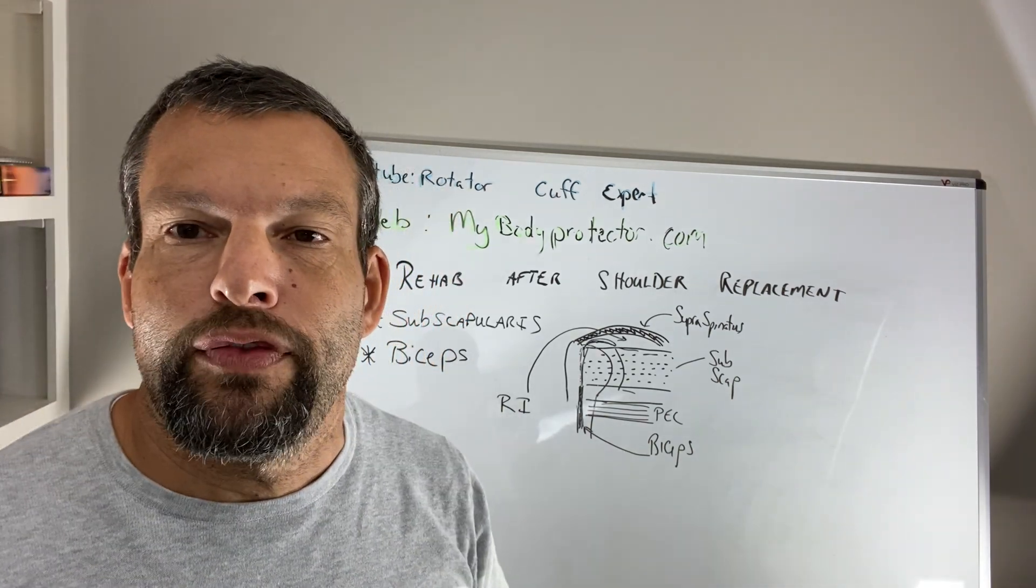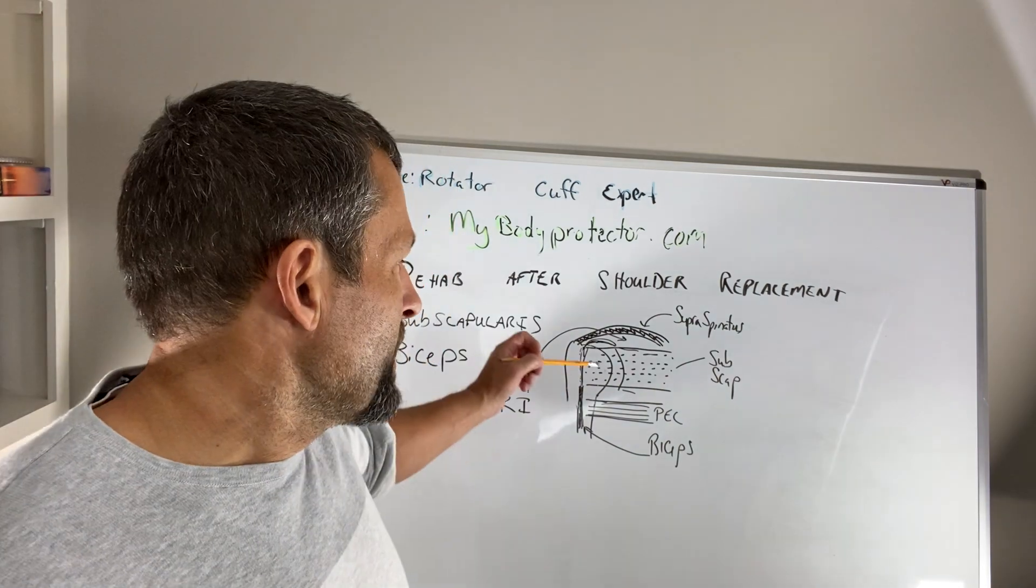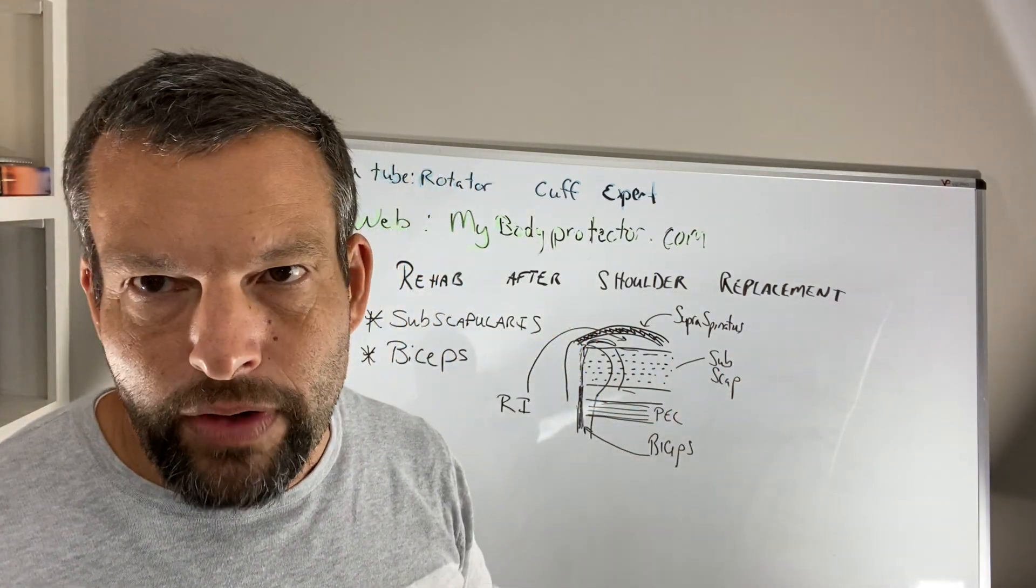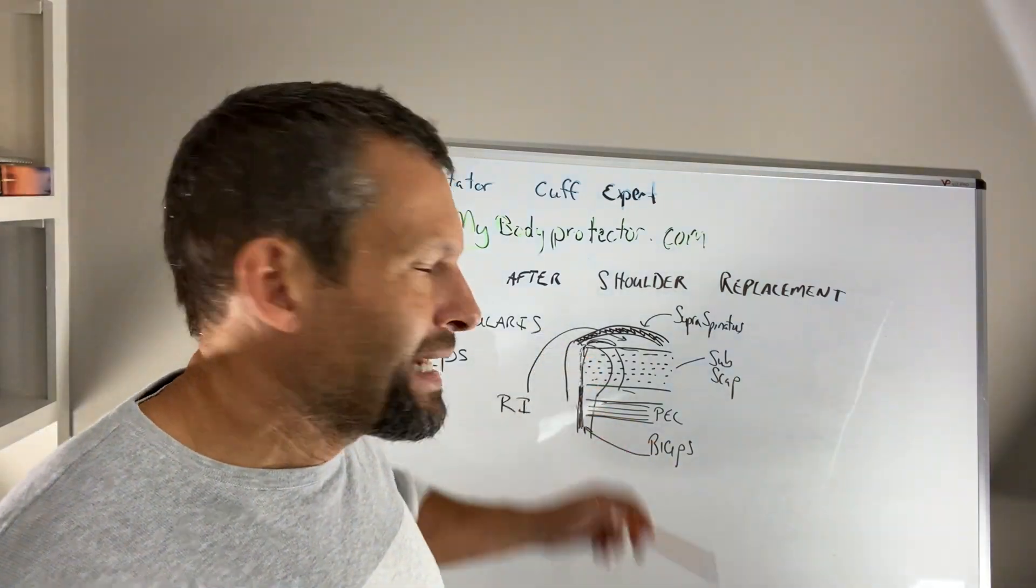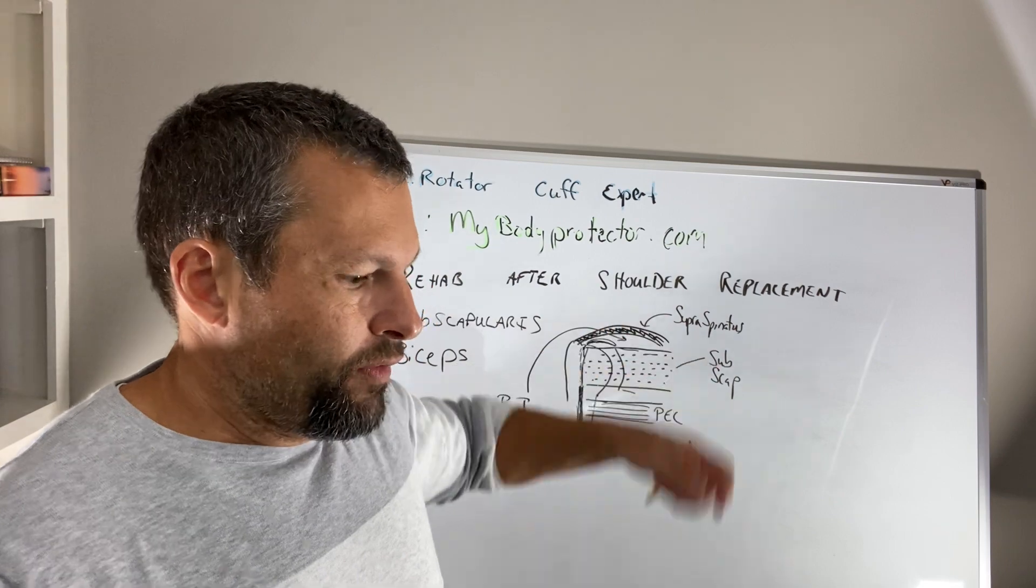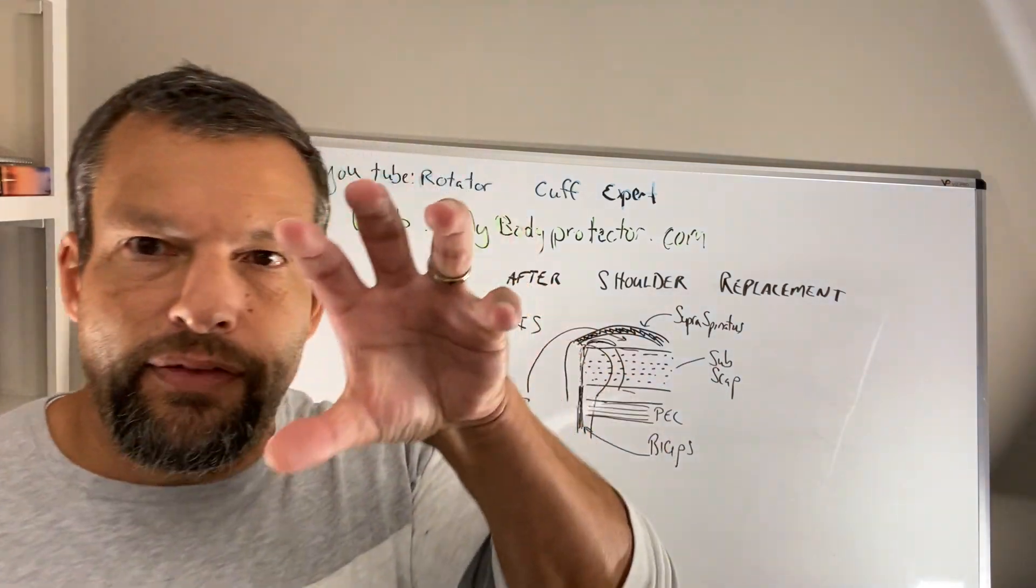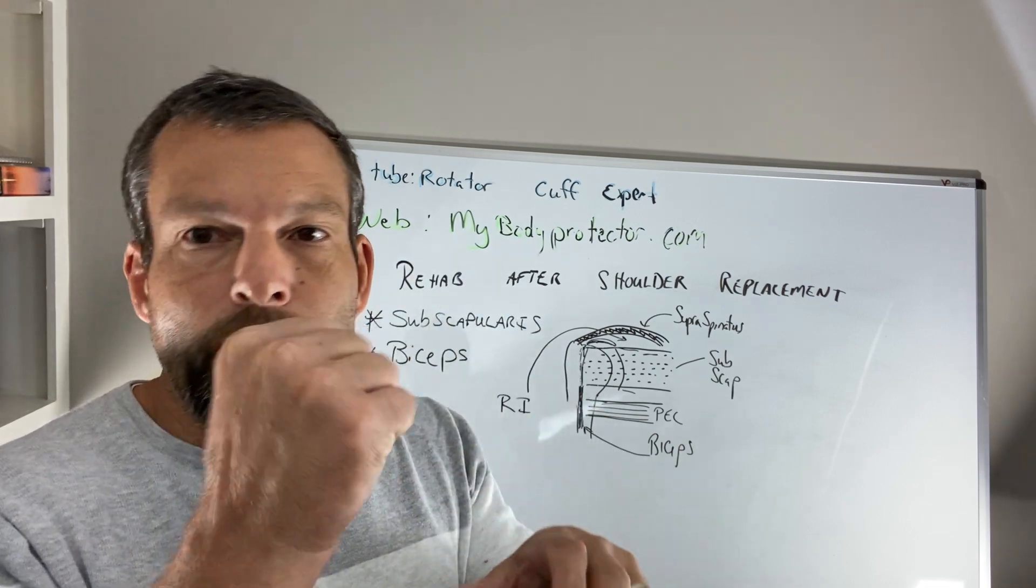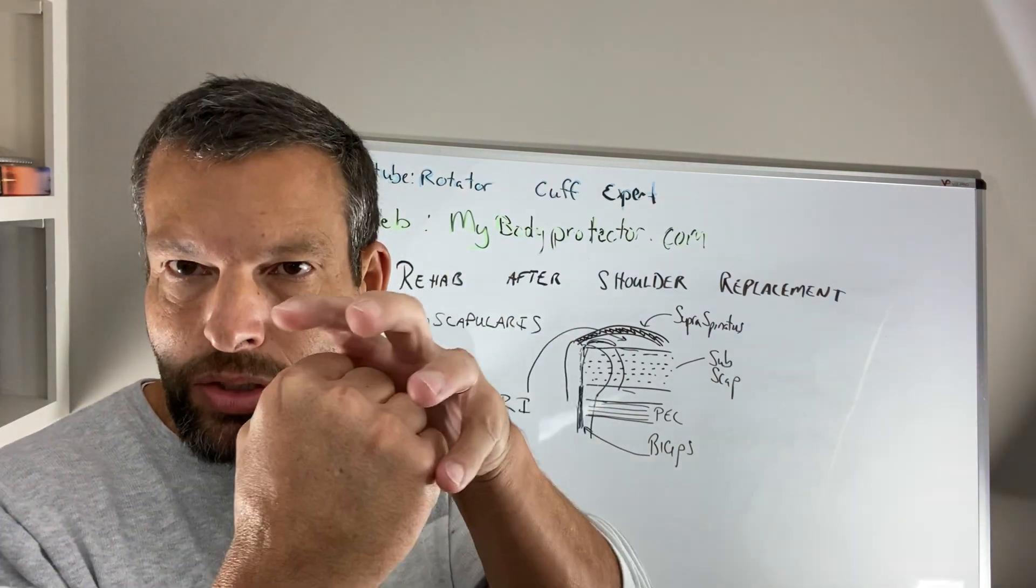If there is a failure of the subscapularis repair and it comes off, then it can very easily create a dislocating total shoulder, right? Because if you can imagine if the rotator cuff is a cuff of muscle and tendon that goes around the ball and now you have a new ball but it's still a ball and you have a new socket but it's still a socket.